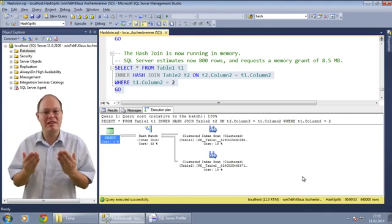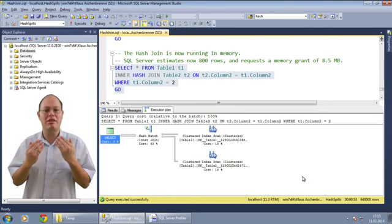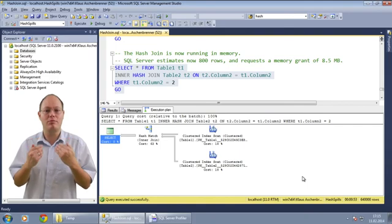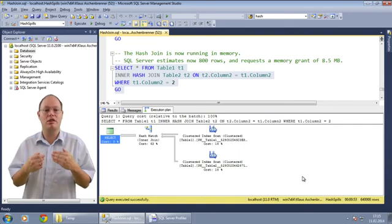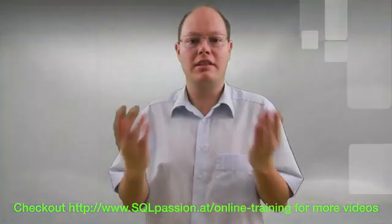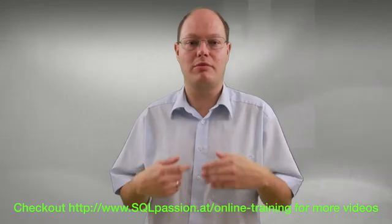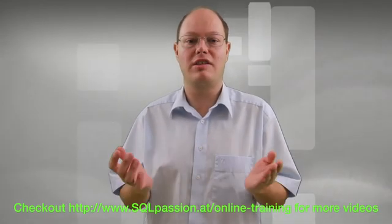As you can see from this simple example, accurate statistics are needed by the hash join operator to make sure that the whole operation stays in memory. In this SQL Server quickie, you have seen the basic concepts behind the hash join in SQL Server.